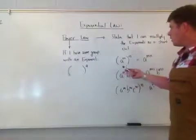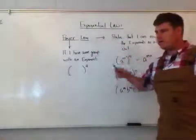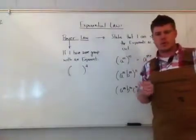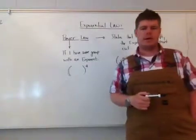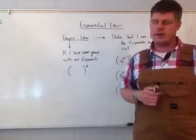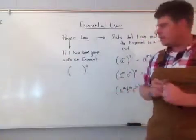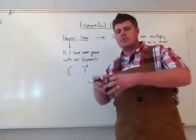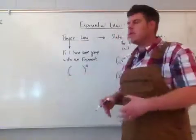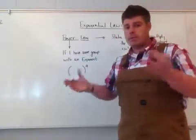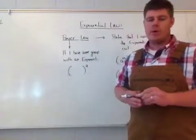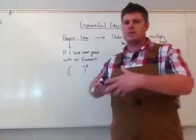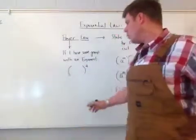The power law states that I can multiply the exponents as a shortcut. The reason for the shortcut is that an exponent tells me how many times I'm multiplying something by itself. Groups are something, so if I put an exponent on a group, it tells me how many times that group is being multiplied by itself.